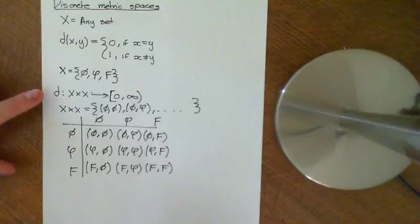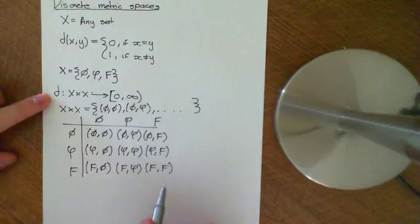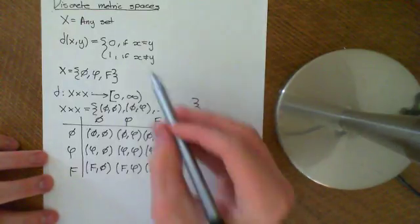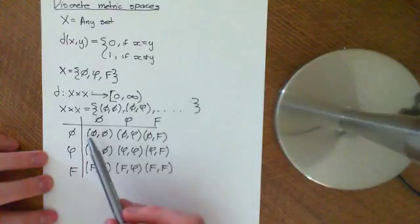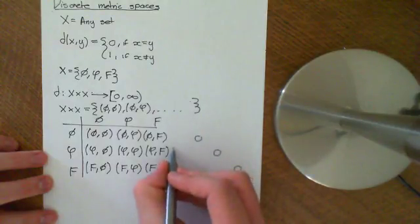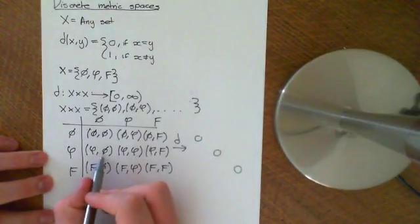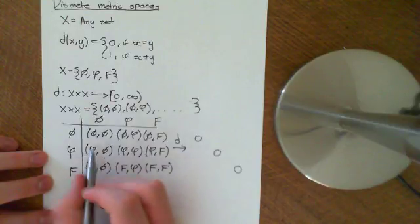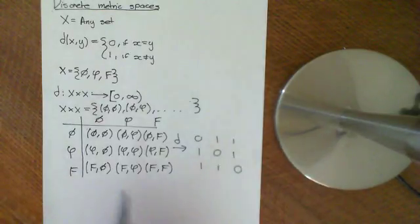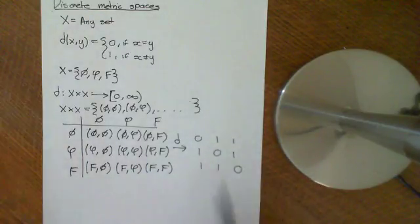This distance function is going to ascribe to each one of these elements a number. The diagonal entries — (Phi, Phi), (phi, phi), (f, f) — are all going to be given the number zero, because in those cases x and y are equal to one another. The off-diagonal entries, where the two things in the ordered pair are not equal to each other, will all be ascribed the number one.